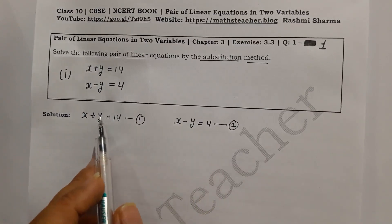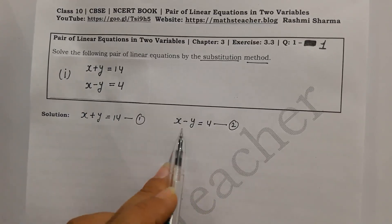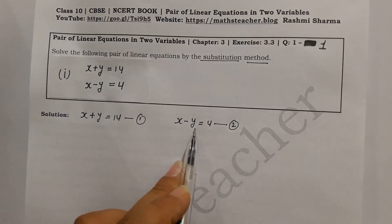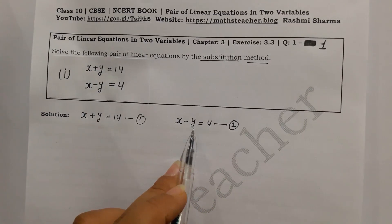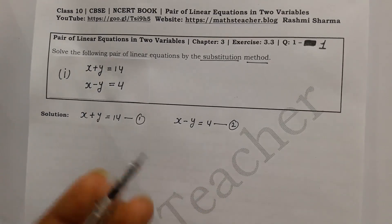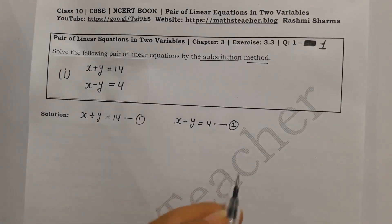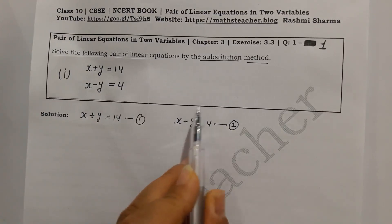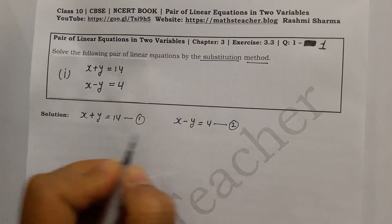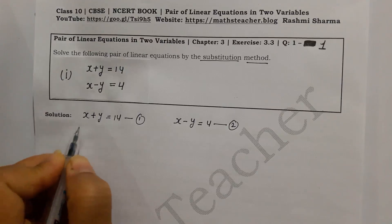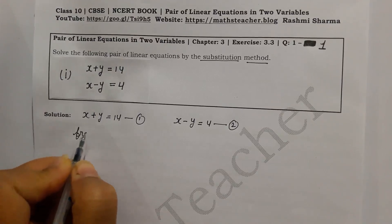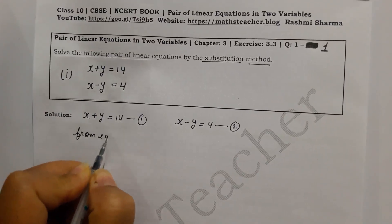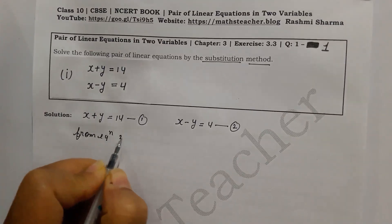Here we have x and y, and in the second equation we have x and minus y, and the coefficient is 1, so we can take any equation. Because this term is negative here, we will take equation no. 2 so that y will be positive.